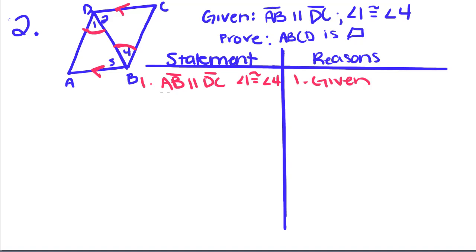If you notice, since these two lines are parallel, that means angle 2 is congruent to angle 3 because they are alternate interior angles. If lines are parallel, alternate interior angles are congruent.